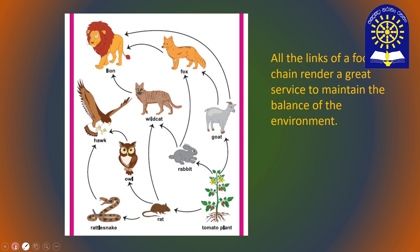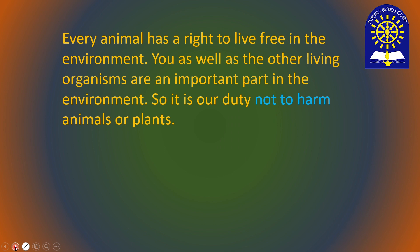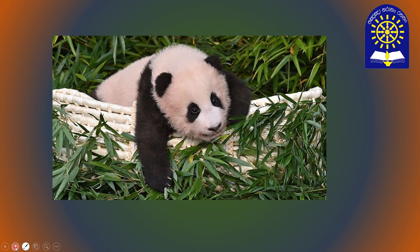Look at this example. Whatever you can see, the food web starts with a green plant. Every organism has a great role in balancing the environment. As human beings, we have to know that every animal has a right to live in the environment, just like you and me. So it is our duty not to harm animals or plants.